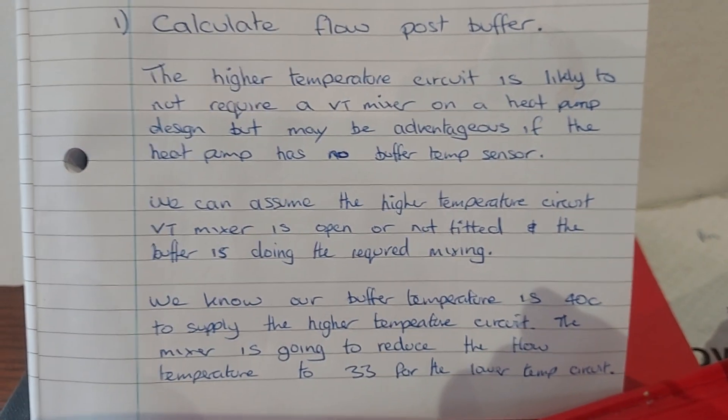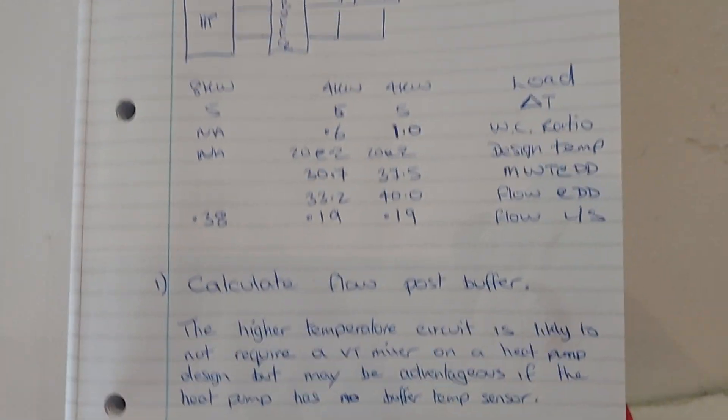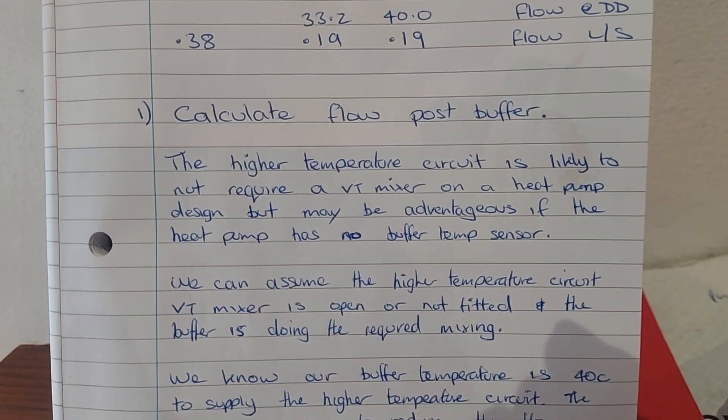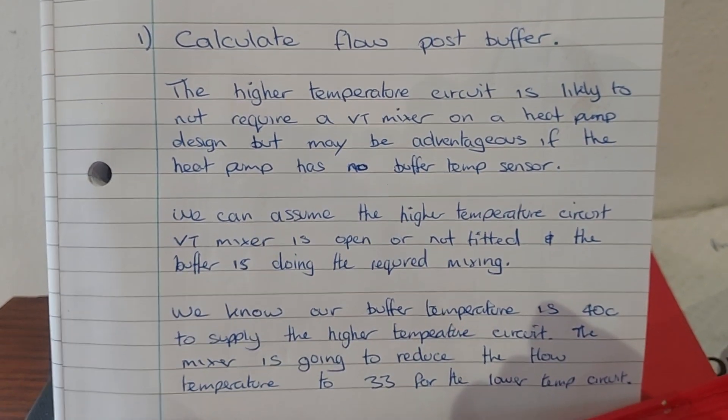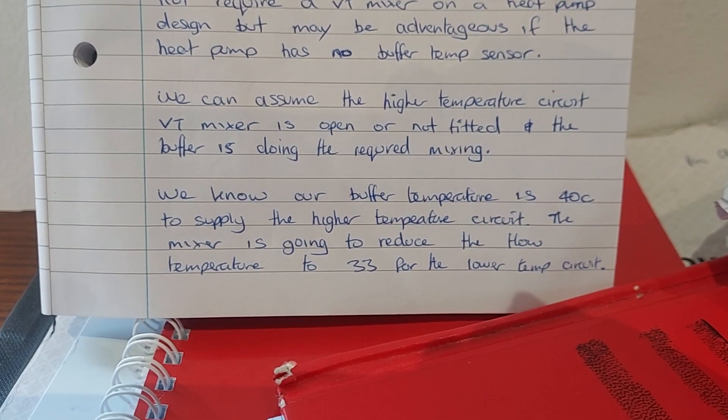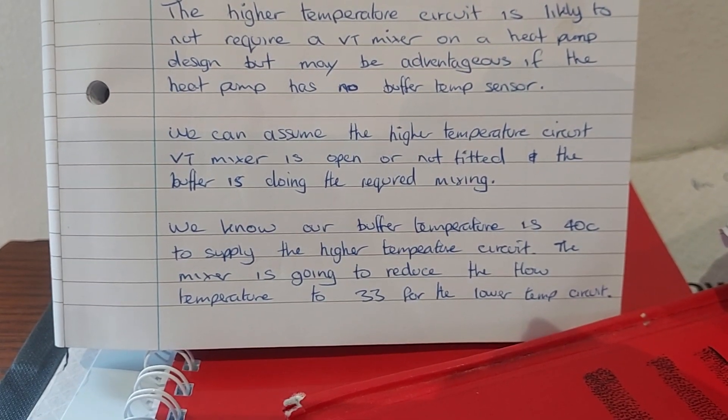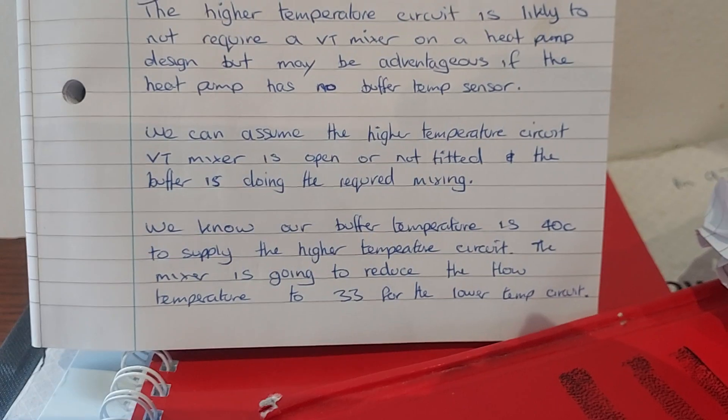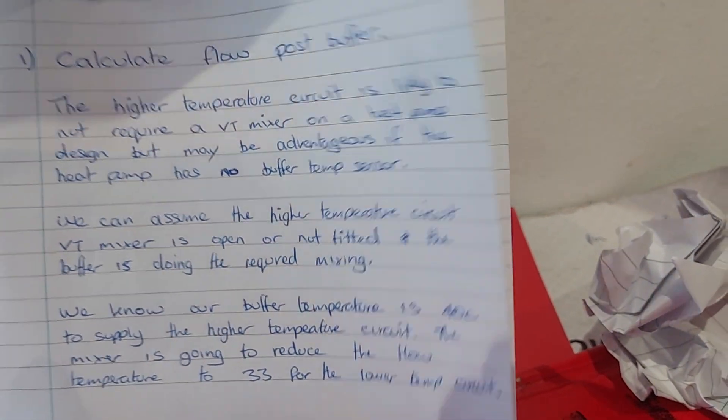We're going to calculate the flow post buffer. We want to calculate the actual flow we're going to have in this circuit here. The myth is that the flow on this site would be greater and that's not the case, but let's go through it. The higher temperature circuit is likely not to require a variable temperature mixer on a heat pump design, but may be advantageous if the heat pump has no buffer temperature sensor. We can assume the higher temperature circuit variable temperature mixer is open or not fitted and the buffer is doing the required mixing. We know our buffer temperature is 40 degrees centigrade to supply the higher temperature circuit. The mixer is going to reduce the flow temperature to 33 for the lower temperature circuit. That's our starting point for our calculations.